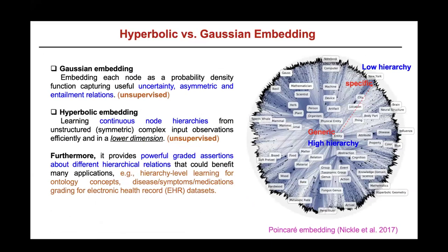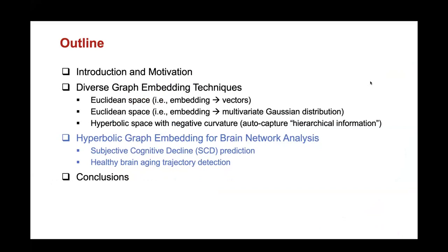This shows hyperbolic embedding compared to the Gaussian embedding I previously worked on. Hyperbolic embedding — from Dr. Nickel's paper in 2017 on the WordNet database — shows that at the center of the Poincaré disk, words are more generic and have a higher hierarchy. Going towards the boundary, we see location, city, and New York — more and more specific, with lower hierarchy. This is a very important property for studying brain networks, which is why we want to choose this approach to study brain disease and aging trajectory detection over time.